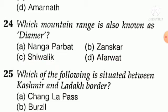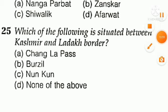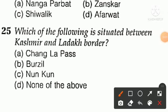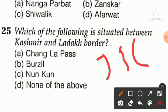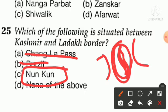Question number twenty-five: which of the following is situated between Kashmir and Ladakh border? Considering UT of J&K and UT of Ladakh, option A — Chang La pass, option B — Burzil, option C — Nunkun. Nunkun is present between the Kashmir and Ladakh border. You have to remember that Nunkun lies between Kashmir and Ladakh.